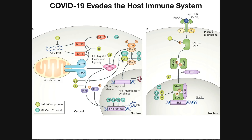Other viral proteins inhibit these processes too. The SARS-CoV M protein inhibits E3 ubiquitin kinases and ligases. The 3B and 6 proteins inhibit the phosphorylation of IRF3 and IRF7, so these transcription factors cannot enter the nucleus and you cannot get upregulation of interferons. The PL-pro protein inhibits the activation of NF-κB, so there's no nuclear response and no upregulation of pro-inflammatory cytokines. The overall result is a failure to produce enough pro-inflammatory cytokines and a drop in interferons — one of the key ways coronavirus evades the host immune system.